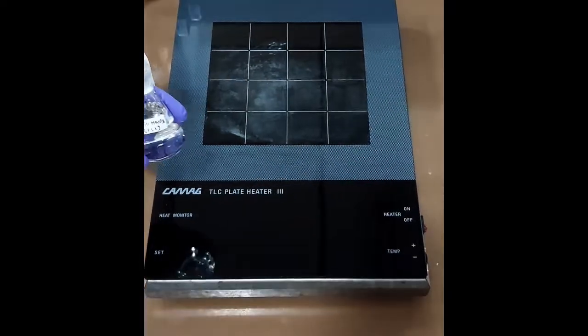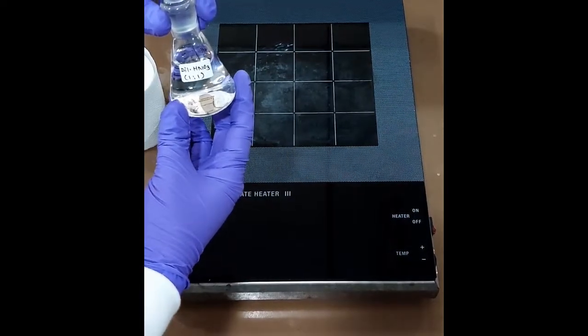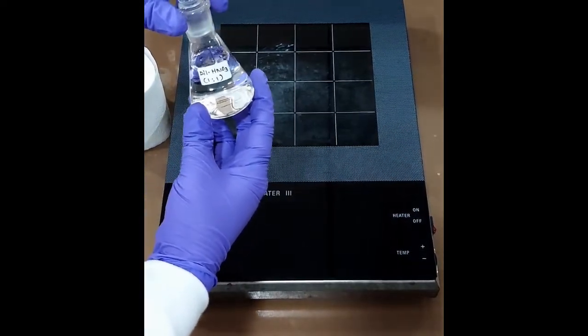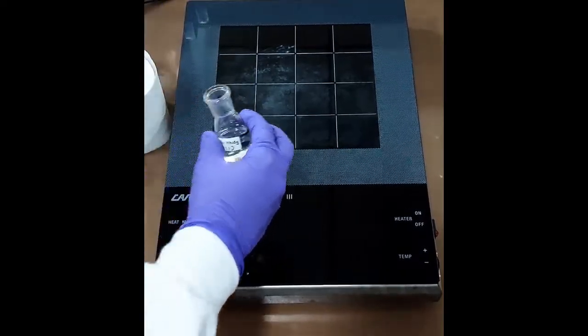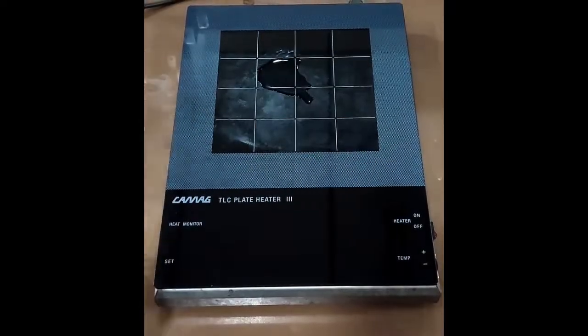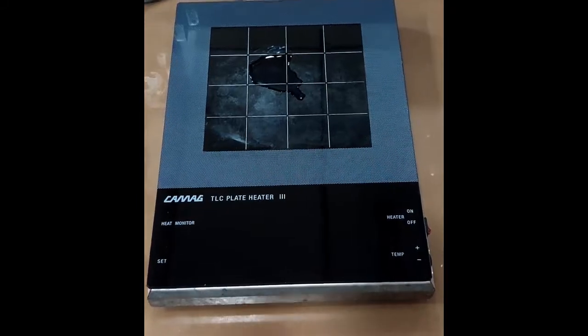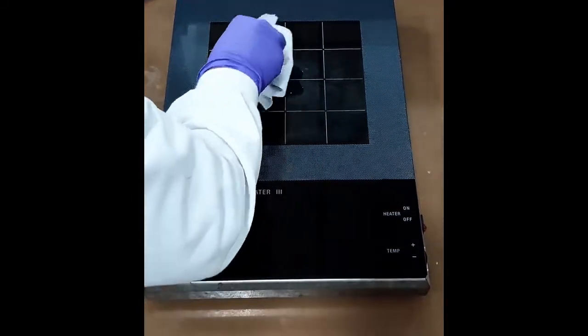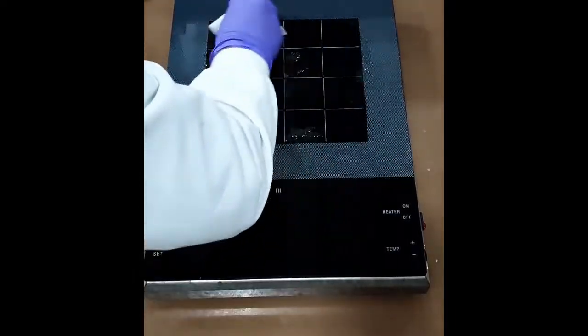For cleaning the heating surface, we will use diluted HNO3, which is nitric acid 1 to 1 with distilled water, by using tissue paper. First, slowly pour the solution and just by using the tissue paper, clean the surface.